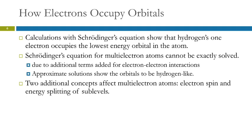Calculations with Schrödinger's equation show that hydrogen's one electron will occupy the lowest energy orbital in the atom unless it takes in energy and gets excited. You can solve Schrödinger's equation exactly for hydrogen, but for multiple-electron atoms it cannot be exactly solved — we can only get approximations. The reason is that we now have electrons interacting with each other, which makes things very complicated. But the approximate solutions show that those orbitals are similar to the ones in hydrogen.